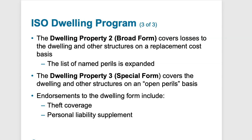The broad form also covers additional perils not covered by the basic form, including: damage by burglars, falling objects, weight of ice, snow, or sleet, accidental discharge or overflow of water or steam, freezing of the plumbing, heating or air conditioning system, sudden accidental tearing apart, cracking, burning, or bulging of a steam or hot water heating or air conditioning system or sprinkler system, and sudden accidental damage from electrical current. The broad form is basically very similar to the basic form, but it has more bells and whistles — it's a more comprehensive coverage.